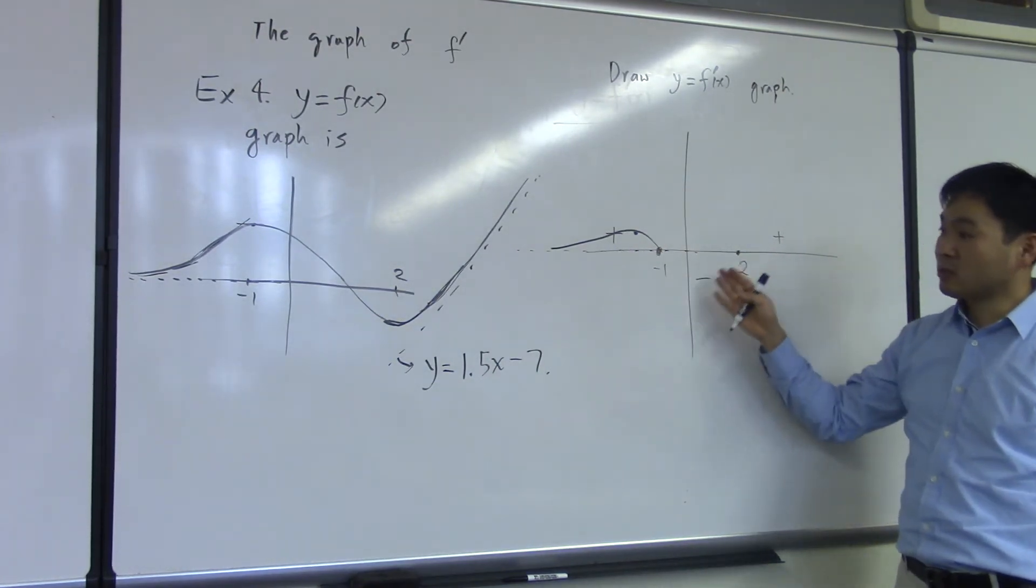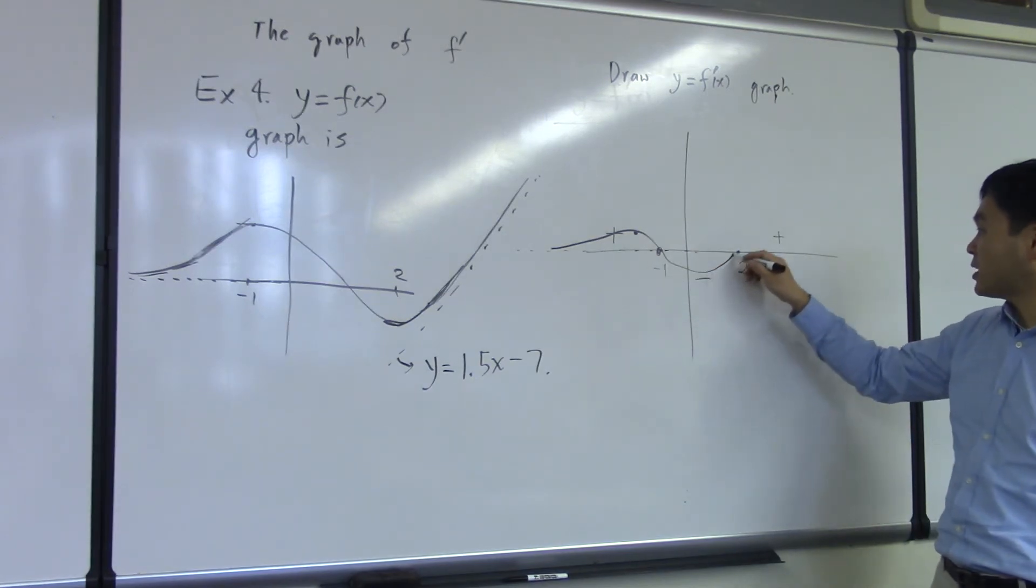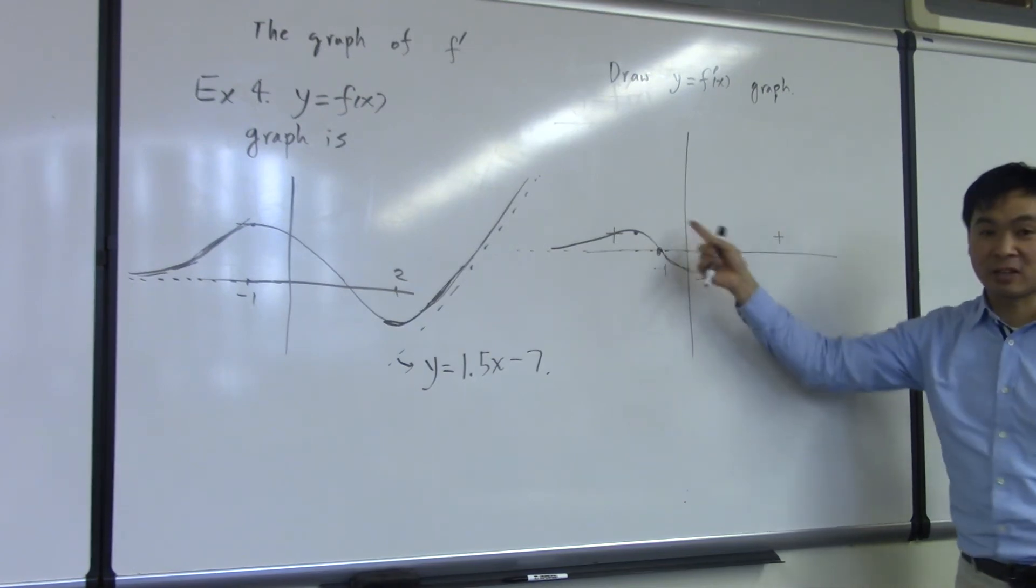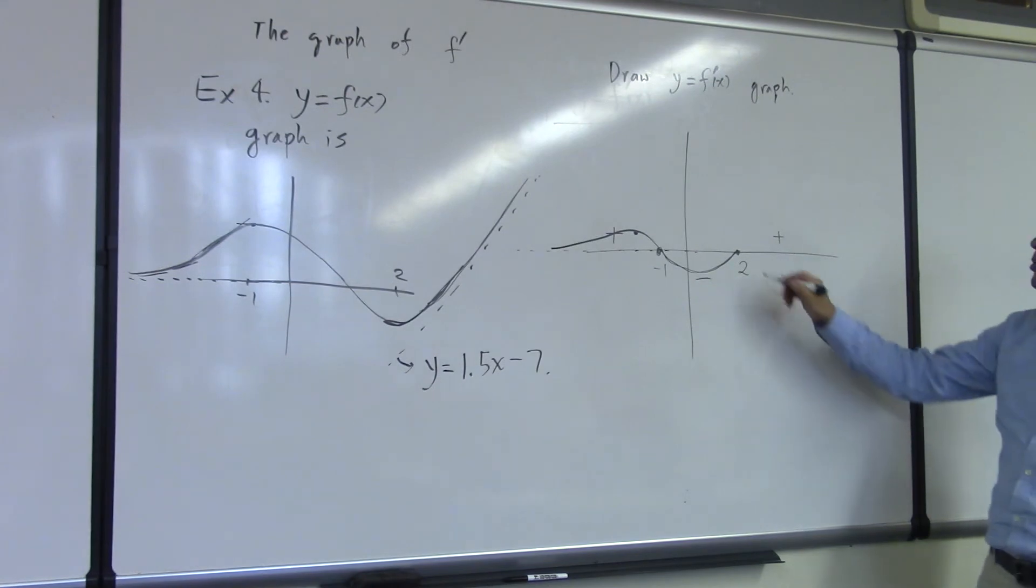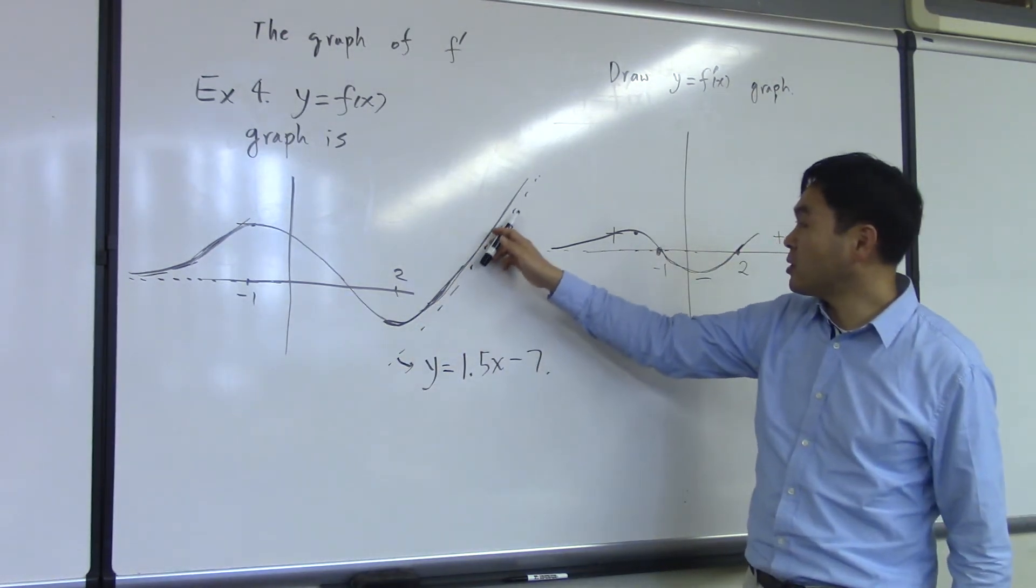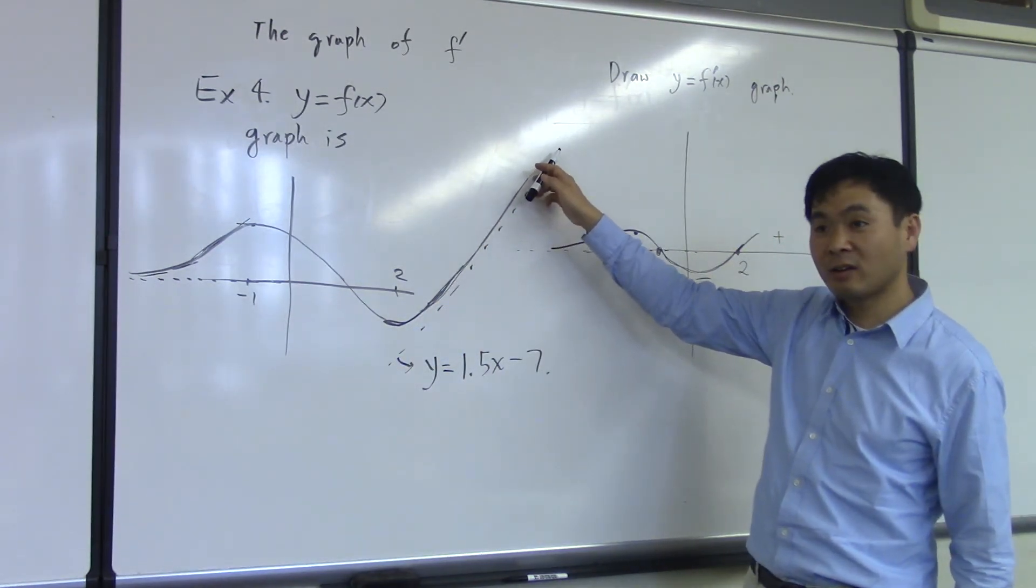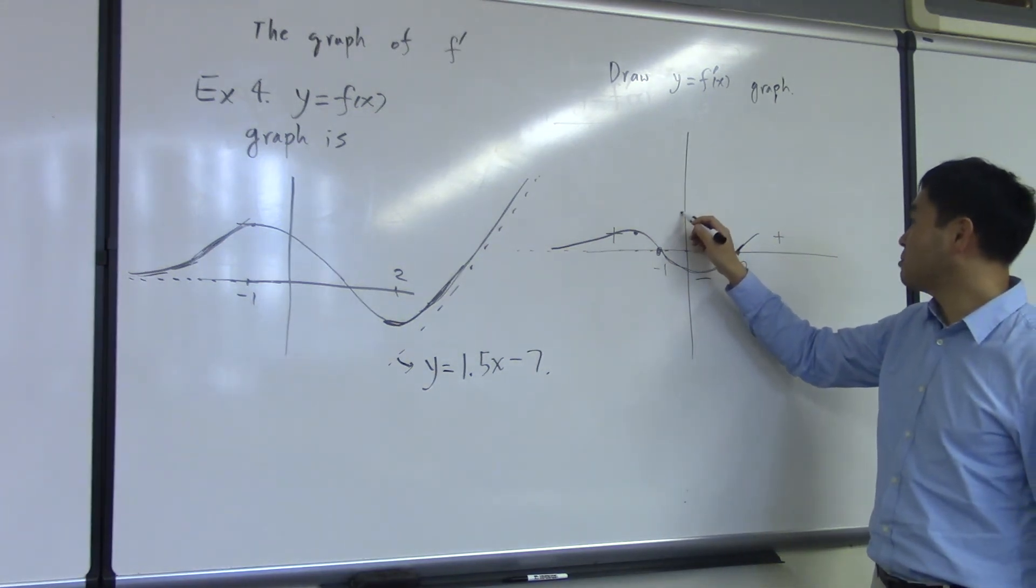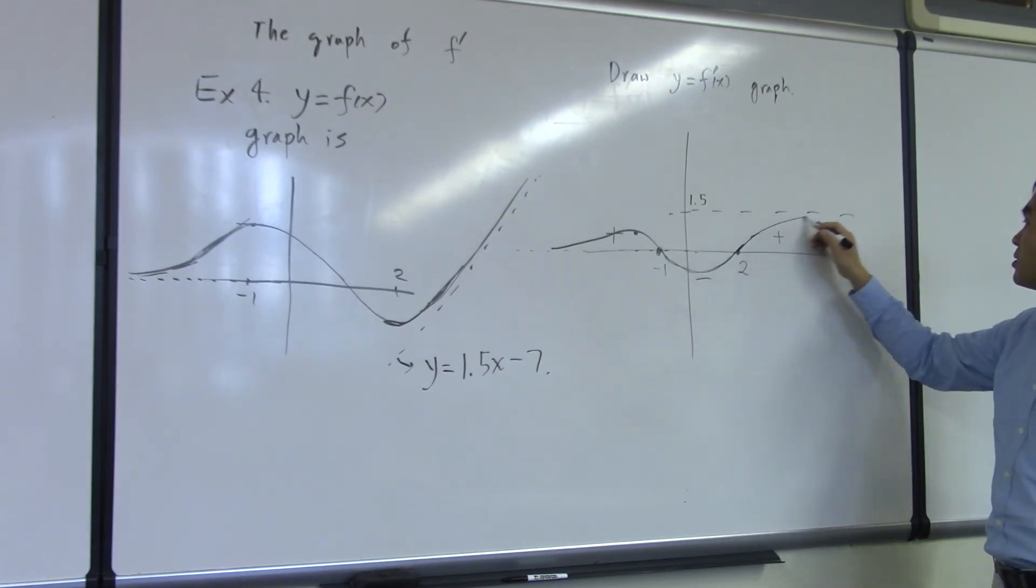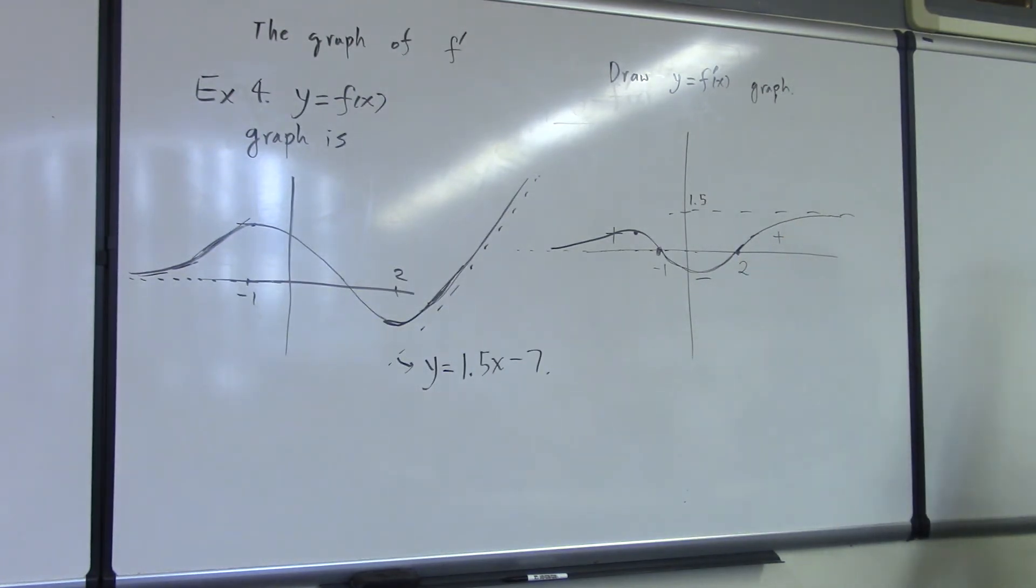Now between negative 1 and 2, you have a negative slope, so you should have a portion of graph that goes like that, connecting these two. And after 2, it goes up, increasing, because it does get steeper, right? But it doesn't get steeper beyond what? 1.5. 1.5 is the maximum steepness you're allowed, right? So as you go right, you have this horizontal asymptote at 1.5. That's the graph, that's what it looks like.